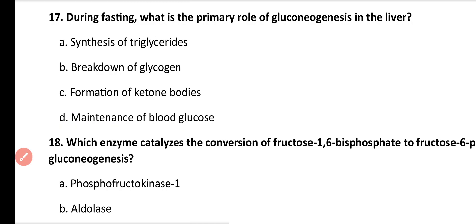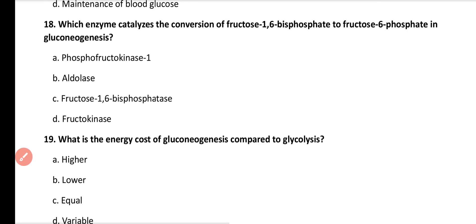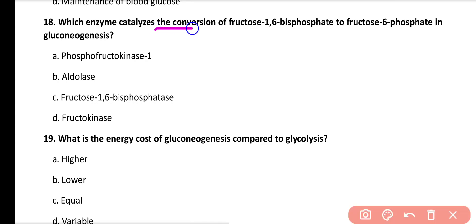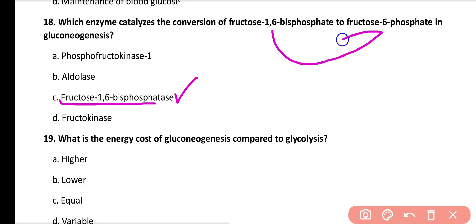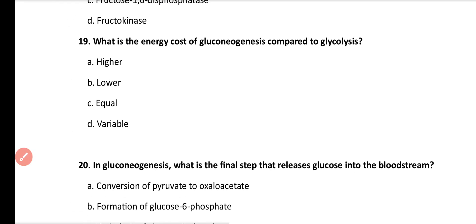Question number 18: Which of the following enzymes catalyzes the conversion of fructose 1,6-bisphosphate into fructose 6-phosphate in gluconeogenesis? Options: phosphofructokinase 1, aldolase, fructose 1,6-bisphosphatase, fructokinase. Correct answer is option C. Fructose 1,6-bisphosphatase converts fructose 1,6-bisphosphate into fructose 6-phosphate.